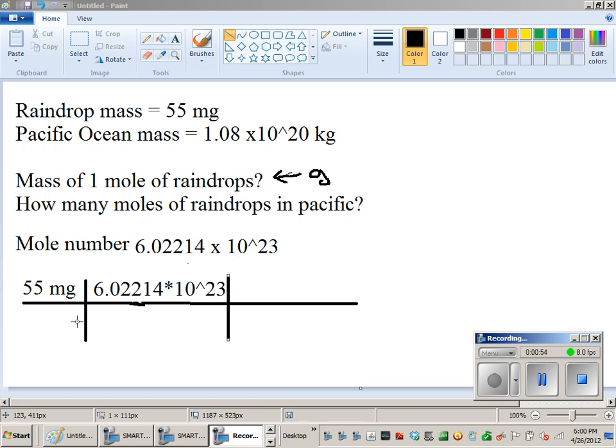That would give me the mass of a mole of raindrops, but I want to have it in grams. So one milligram is equal to one thousandth of a gram.